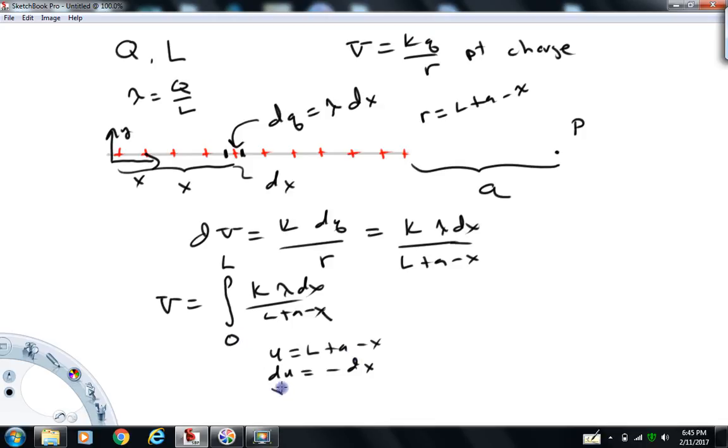So if x is equal to 0, u I can get from this expression. That's going to equal l plus a. And if x is equal to l, u would equal a. So my new integral is identically equal to the new one, which is now going to run from l plus a to a. k lambda, the dx is minus du, I'm going to just bring the minus sign out front, over u.